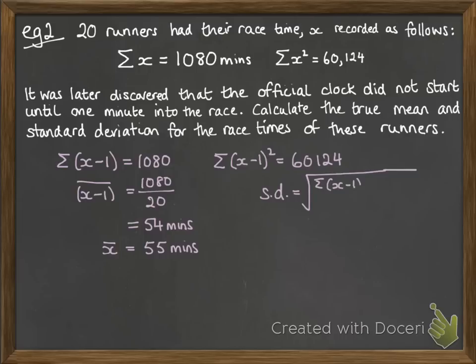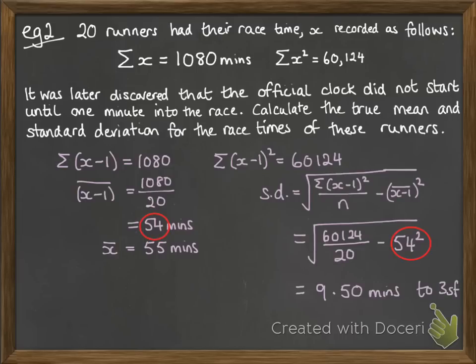Now we can work out the standard deviation. Just remember that the mean that you're subtracting in that formula, that I've circled in red here, is the mean of the data before the adjustment, so the x minus 1 mean, not the 55, which is the true mean of x bar.